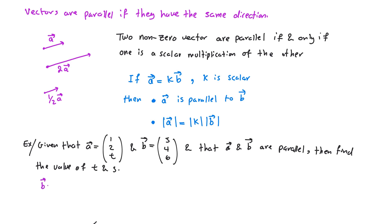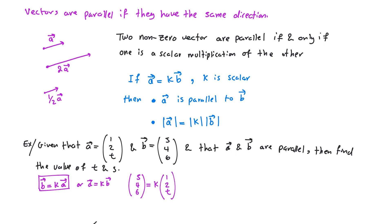To find these two values, we write the concept we just learned: vector b is equal to a scalar value k times vector a. Looking at the two vectors, vector b has slightly larger values, so we write that b = [s, 4, 6] = k × [1, 2, t]. Using the y-coordinate: 2k = 4, so k = 2.